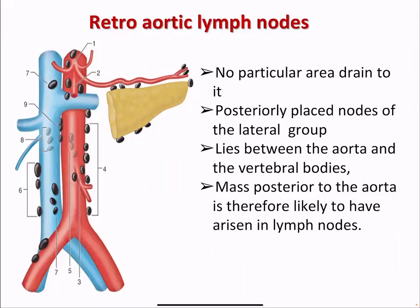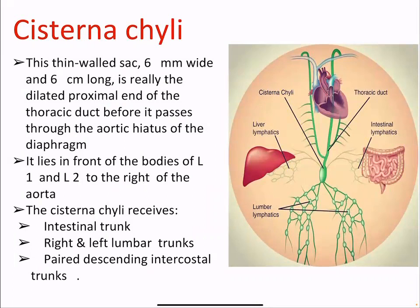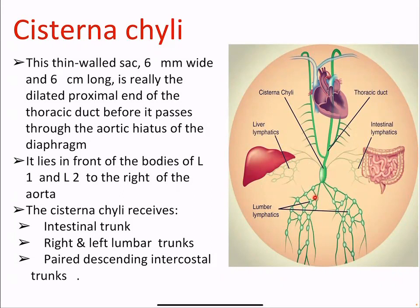Any mass seen in that area is suggestive of lymph nodes or enlarged lymph nodes. The cisterna chyli is a thin-walled sac, 6 mm wide and 60 mm long, and is the dilated proximal end of the thoracic duct before it passes through the aortic hiatus of the diaphragm. It lies in front of the bodies of L1 and L2 to the right of the aorta. The cisterna chyli receives the intestinal trunks, the right and left lumbar trunks, and the paired descending intercostal trunks.